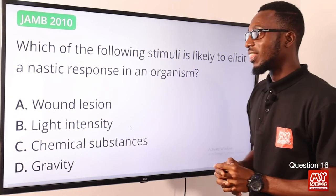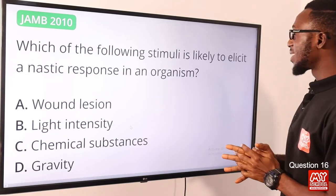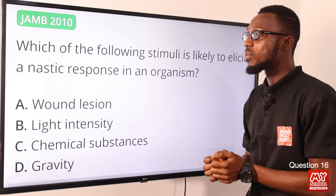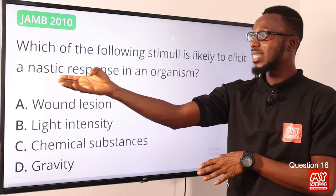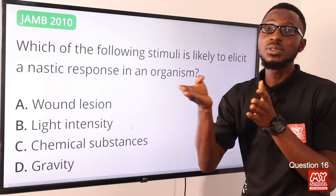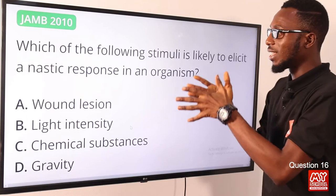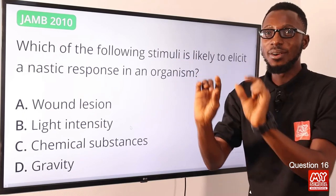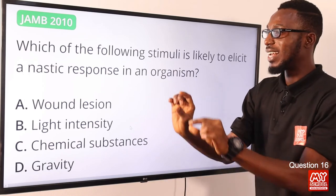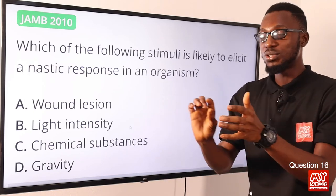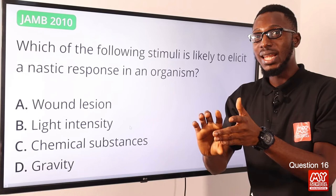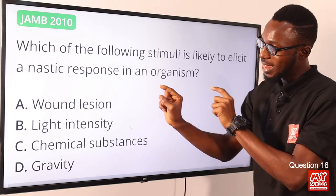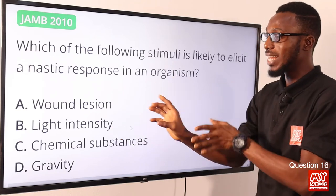Question 16: Which of the following stimuli is likely to elicit a nastic response in an organism? A nastic response is when a part of a plant responds to a non-directional stimulus. Examples of such stimuli include humidity, temperature, and light intensity. The correct option is option B, light intensity.